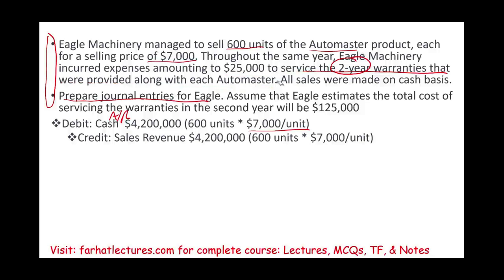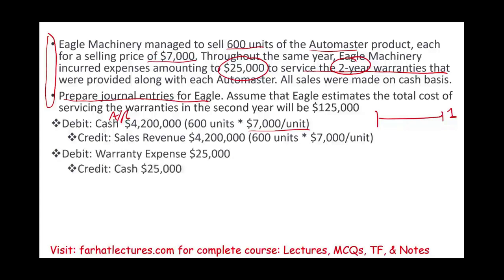Now, in the year of the sale — let's call it year one — the company incurred $25,000 in warranty expense. In other words, they serviced the product and incurred that $25,000. We're going to debit warranty expense $25,000, and credit either cash, parts, inventory, or payroll — whatever was incurred. We'll assume they paid $25,000 cash to replace the defective item.